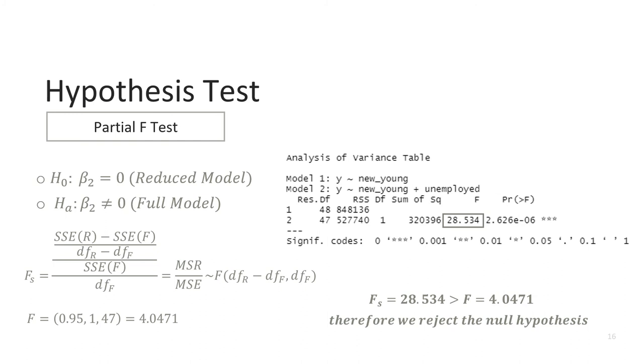In order to fully answer our research questions, we still need to validate our final model with a hypothesis test. Here we are performing a partial F test to see if unemployed is significant. The critical F value is calculated as 4.0471. To evaluate the F statistic, we look at the extra sum of squares, which can be found by running the ANOVA table between the full and reduced models. The reduced model excludes unemployed, while the full model includes it. The F statistic is shown as 28.534. Because this is greater than our critical F value, we can reject the null hypothesis and conclude that unemployed is a significant predictor in our model.